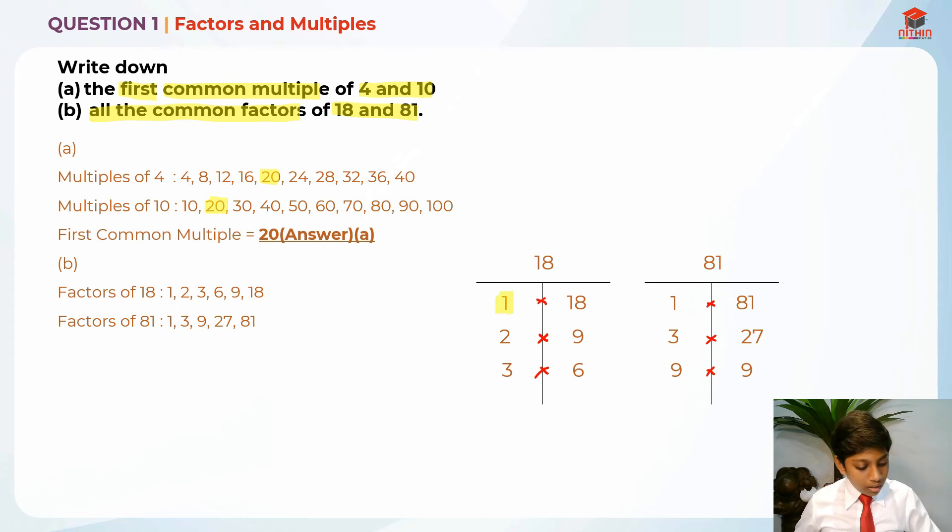What is common? 1 is common between both of them. Is 2 common? No. 3 is common. Yes, 3. 3 is common and there's a 9 which is common. So that's this line. 1, 3 and 9. So 1, 3 and 9 are common. So all the common factors of 18 and 81 is 1, 3 and 9. This is the answer for part B.